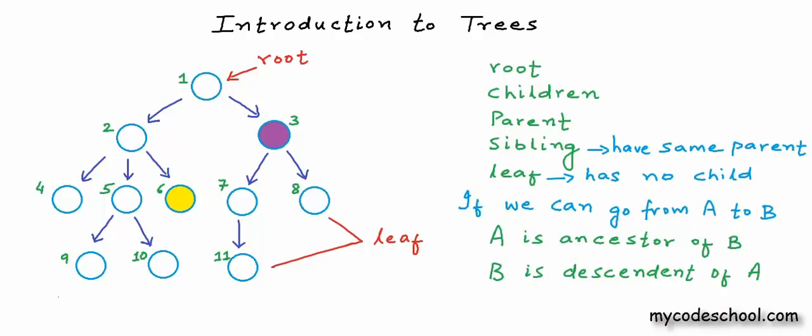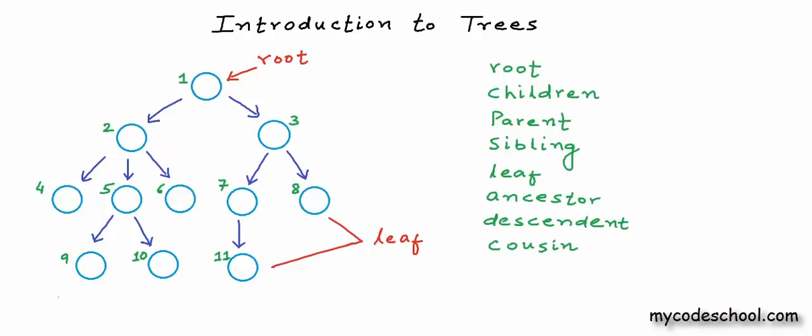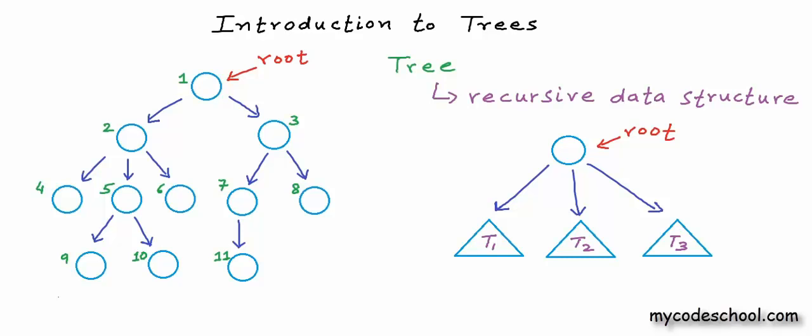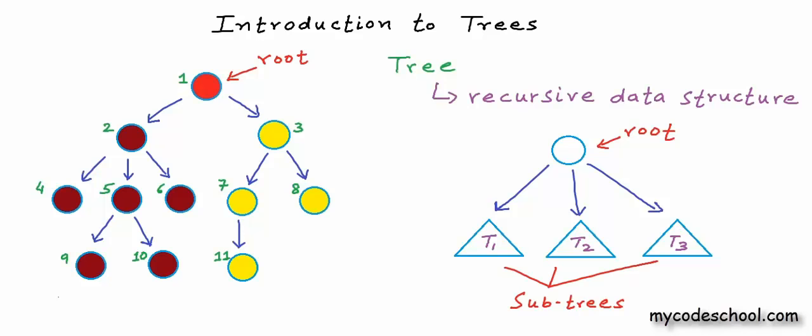Now I'll talk about some properties of tree. Tree can be called a recursive data structure. We can define tree recursively as a structure that consists of a distinguished node called root and some subtrees, where the root contains links to the roots of all its subtrees. T1, T2 and T3 in this figure are subtrees. In the tree I've drawn, we have two subtrees for the root node — the left subtree and the right subtree. We can further split the left subtree: node 2 is root of its subtree, which itself has 3 subtrees. Recursion is basically reducing something in a self-similar manner, and this recursive property of tree will be used everywhere in all implementation and uses of tree.